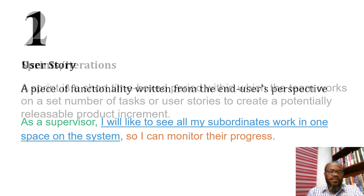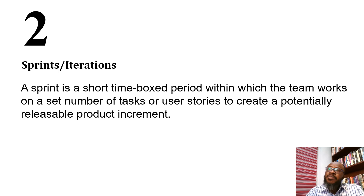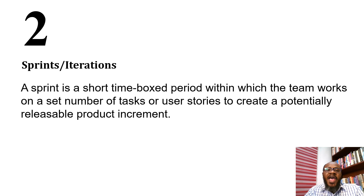The next concept is a sprint. Sprint and iterations are often used interchangeably. A sprint is a short time-boxed period within which the team works on a set number of tasks or user stories to create a potentially releasable product increment. On agile projects, deliverables are broken down, and one of the granular levels is a sprint, which ultimately contains a set of user stories.